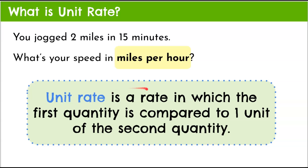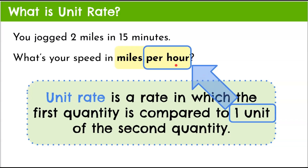Unit rate is a rate in which the first quantity is compared to one unit of the second quantity. Our units are miles and hour, and that one unit is the second — the denominator of our ratio. When we say 'per hour,' this means one hour, so the number of miles in one hour makes this a unit rate. We want to find: if we've jogged two miles in 15 minutes, what is our unit rate in miles per hour?